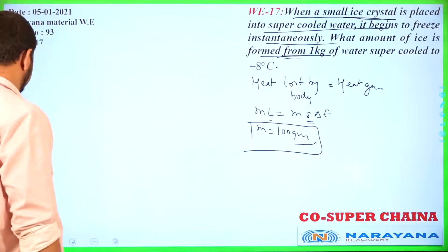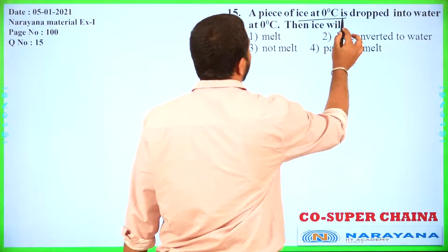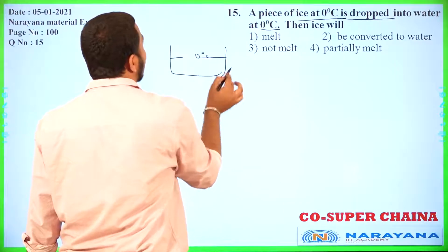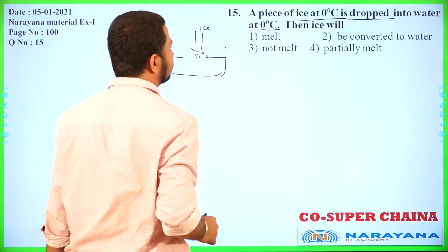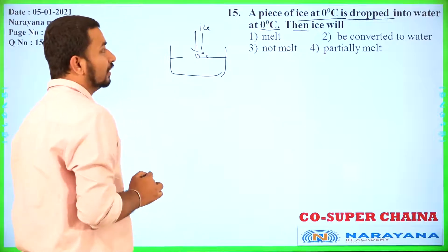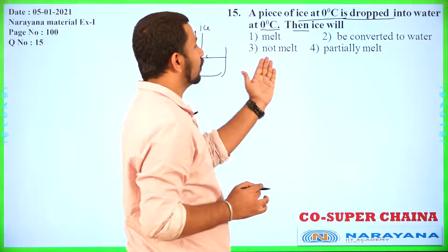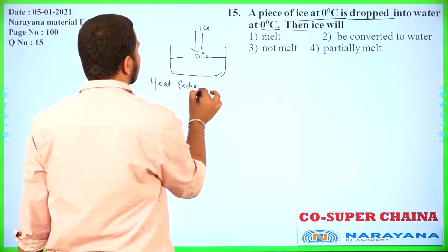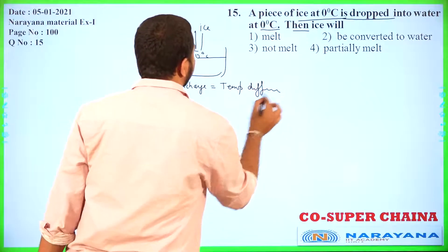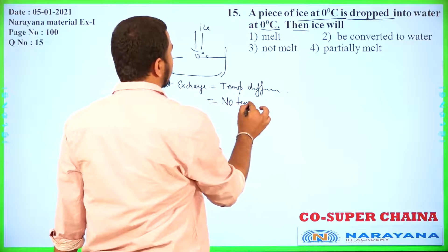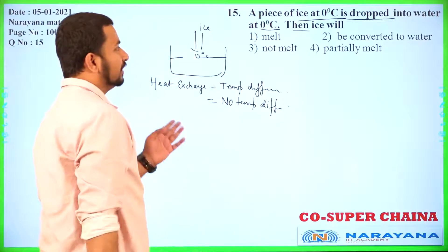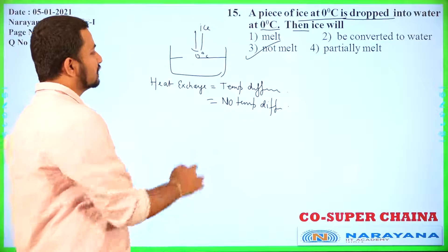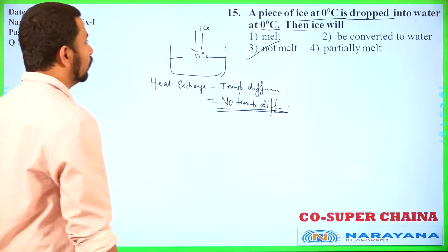A piece of ice at 0°C is dropped into water at 0°C. How much ice will melt? For heat exchange there must be a temperature difference, but here there is no temperature difference between the two systems. Since there is no temperature difference, there will be no melting of ice. No melting is the answer of this question.